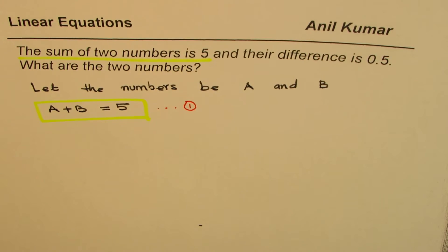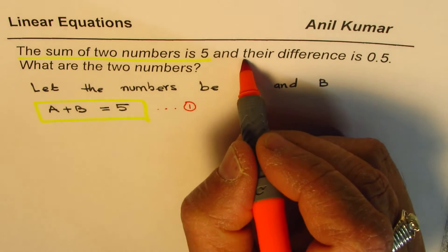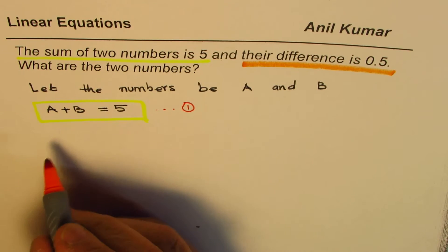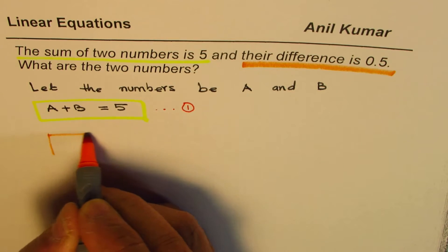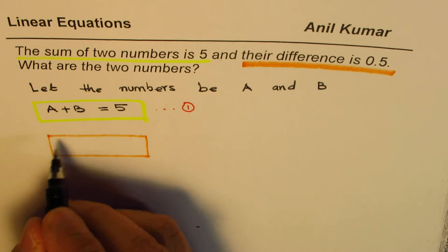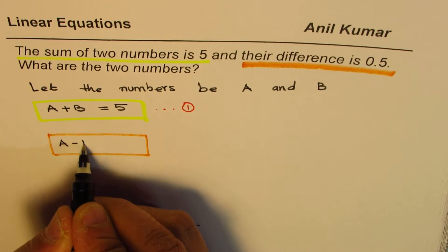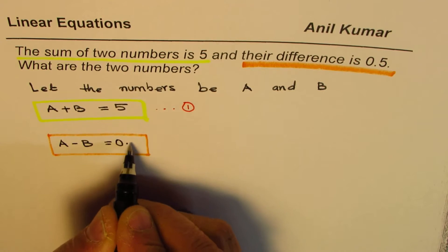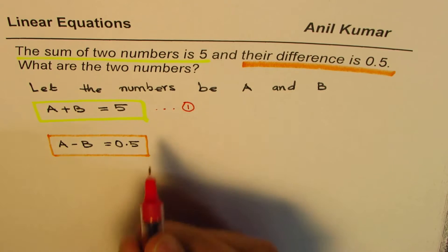The second statement here is, and their difference is 0.5. Now when they say difference is 0.5, I'll write the second equation. So the second equation here is A minus B. I'm assuming A to be a bigger number than B, so I'm saying A minus B. It could be any order. A minus B equals 0.5. So we'll write this as our second equation.